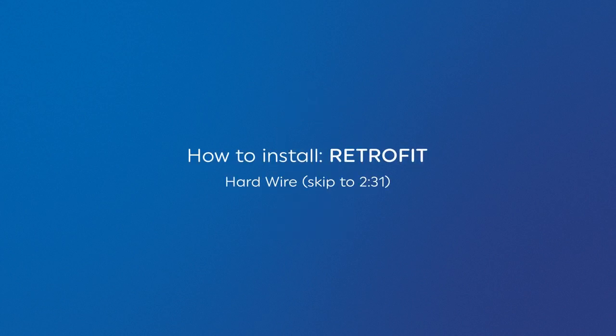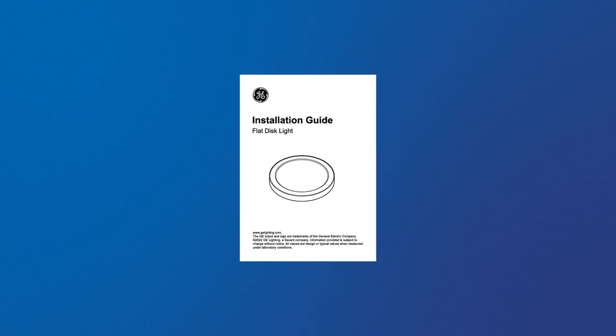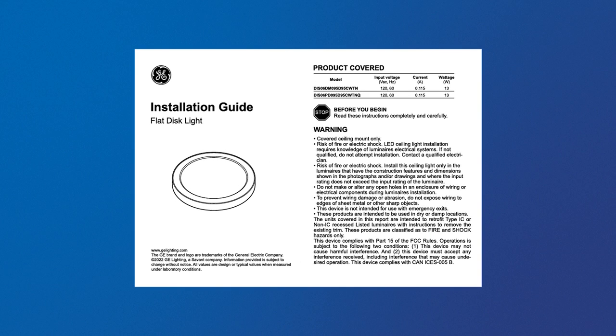To install by hardwiring into an existing junction box, skip ahead the video to 2 minutes 31 seconds. Before you begin, we ask you to please read through the warning page of the installation guide and follow the steps very carefully.